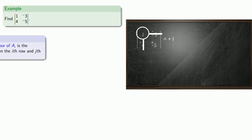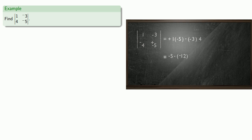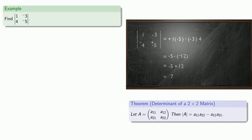Since this is a 1 by 1 matrix, the determinant of that minor is just the entry itself. Then we take the second entry in the first row along with its sign, cross out the row and column to form the minor, and again, as a 1 by 1 matrix, the determinant is just the value of the entry itself. We evaluate our products and sums to find the determinant. For a 2 by 2 matrix, the determinant is the product of the terms along one diagonal minus the product of the terms along the other diagonal.